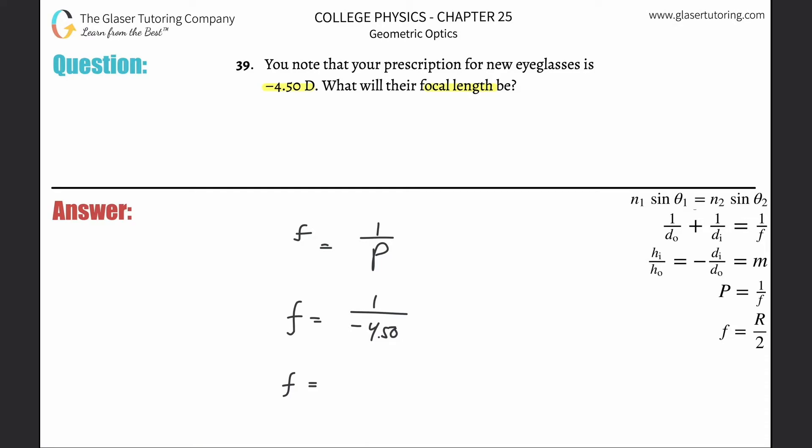So just simply take one divided by negative 4.5 and we get the value of the focal length being negative 0.2222 meters.